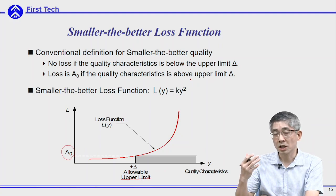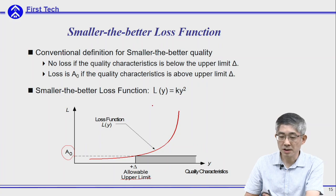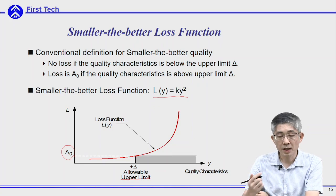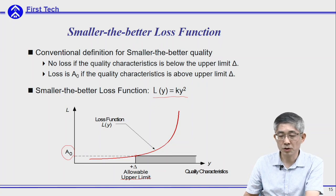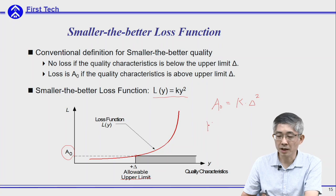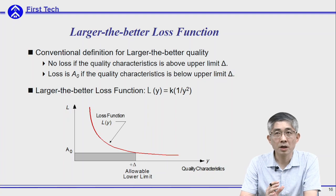Similarly, Taguchi uses the quadratic loss function passing through this conventional control point, and then you can get the coefficient K by substituting the numbers in. Therefore A₀ will be equal to K multiplied by Δ², so K will be equal to A₀ divided by Δ² as well.